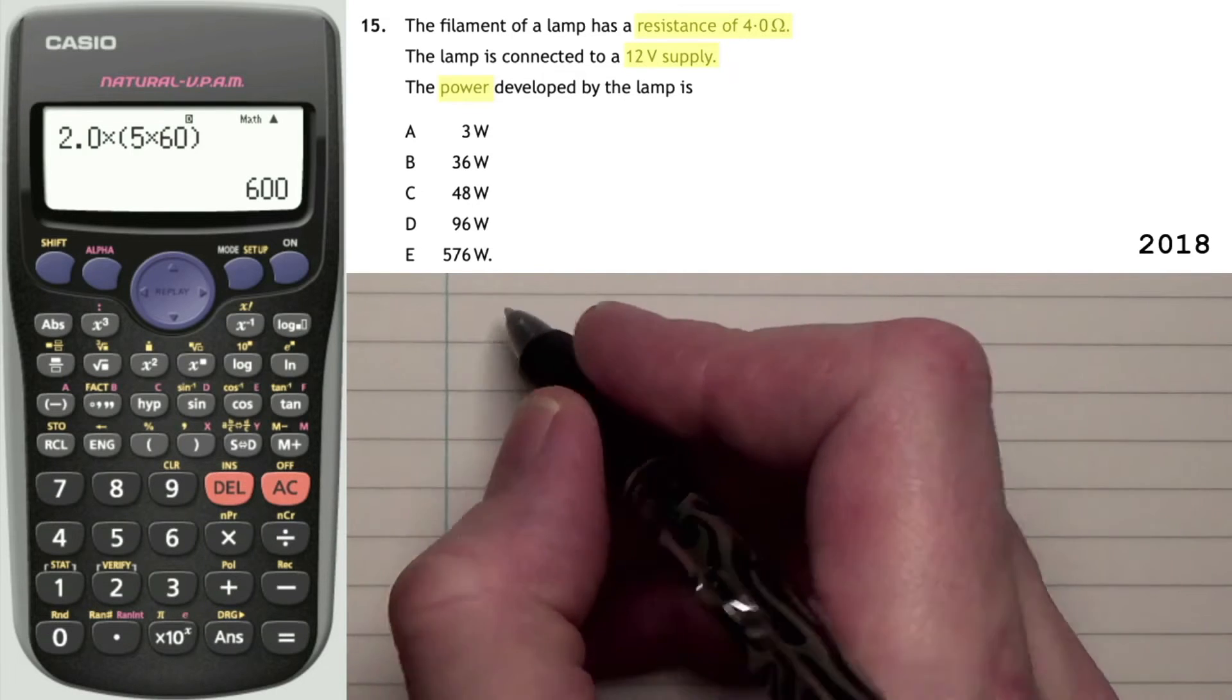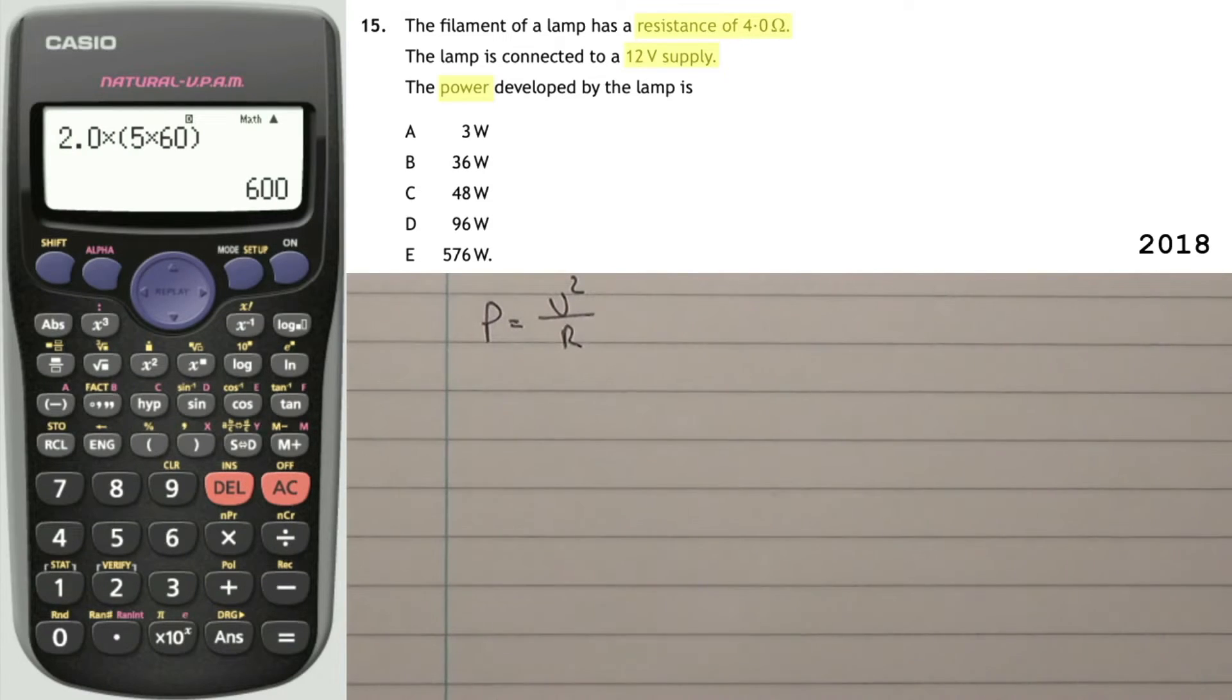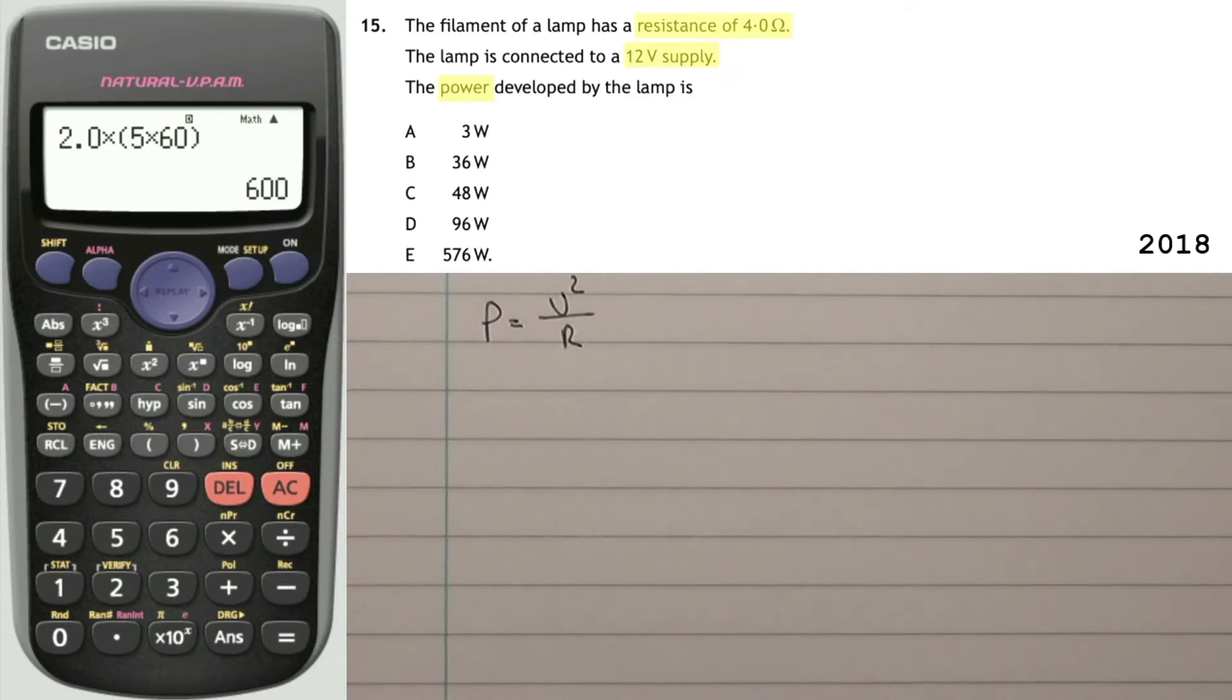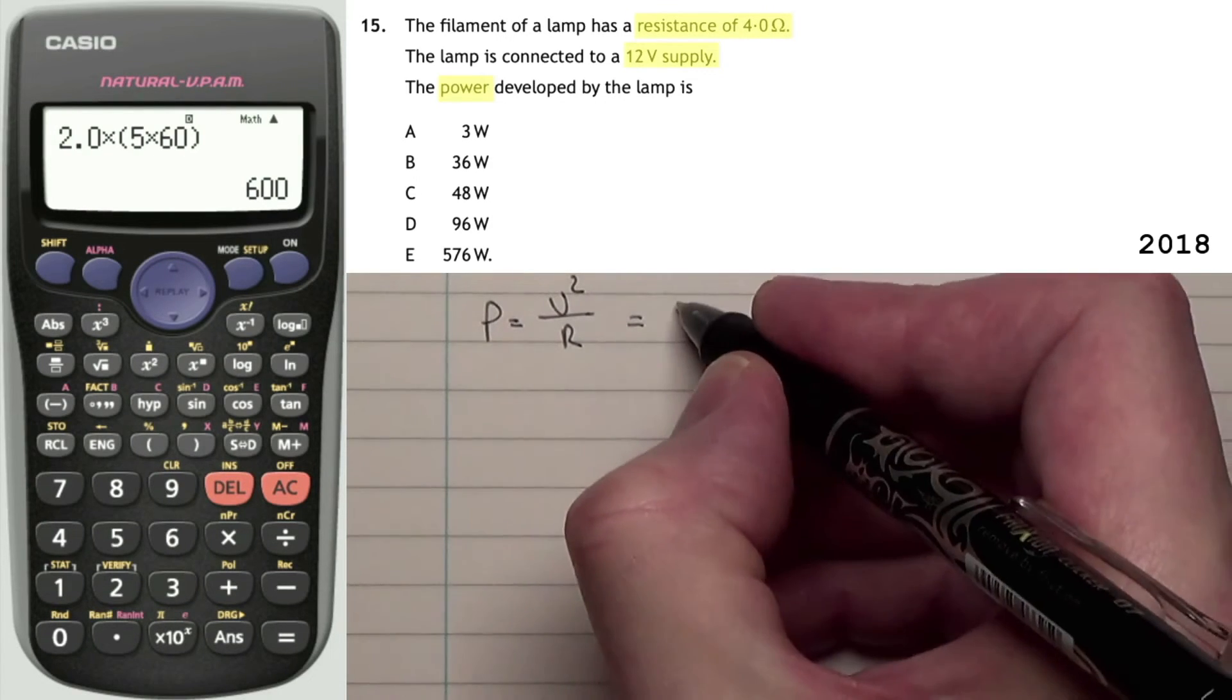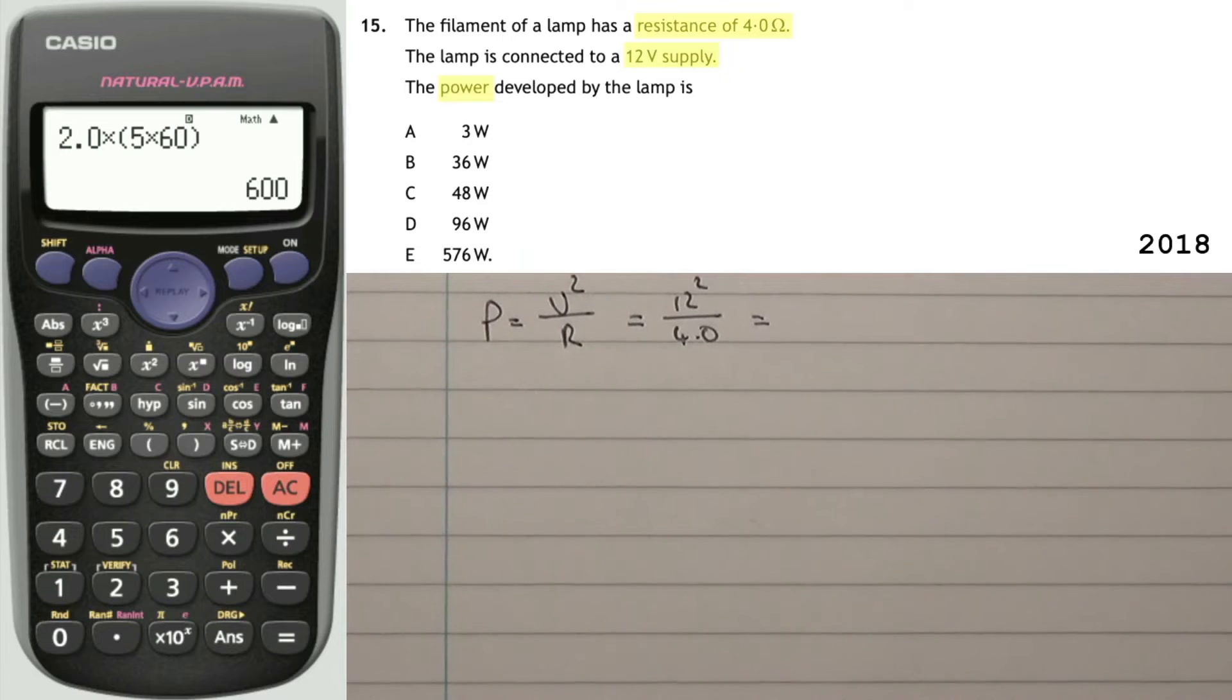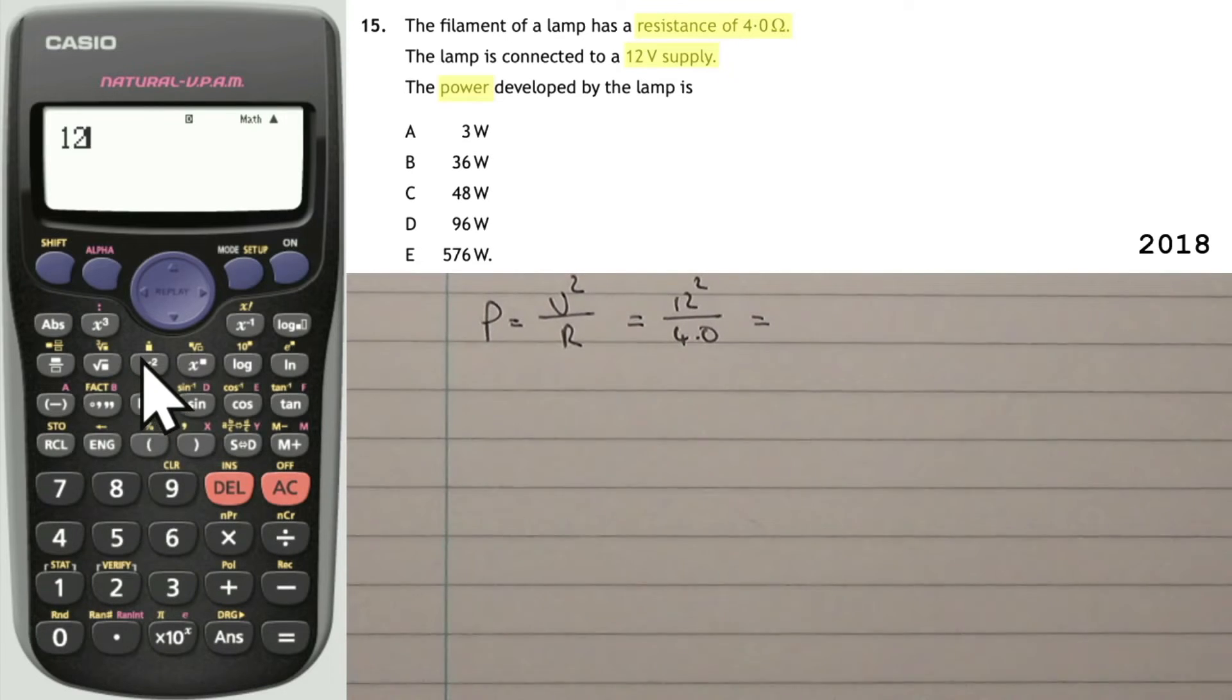Okay, hopefully the equation that you actually found in the relationship sheet was P is equal to V squared divided by R. So P is power, V is voltage, and R is resistance. What you would then do in the written section is you would substitute those values. So what do we have? We're wanting to find power, and we have a voltage of 12. So that would be 12 squared divided by resistance of 4, and that would give us a value. Get rid of that in the calculator. 12 squared divided by 4.0, and that's going to give us an answer of 36.